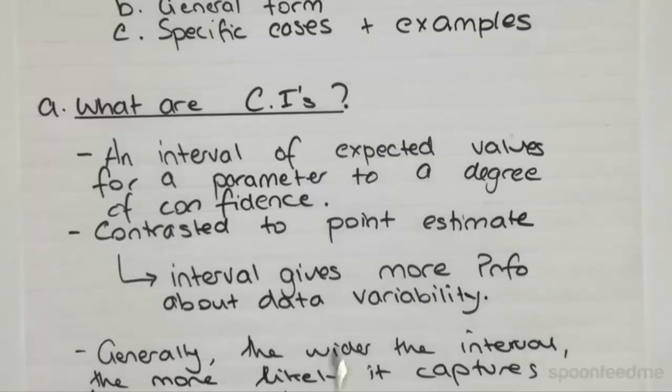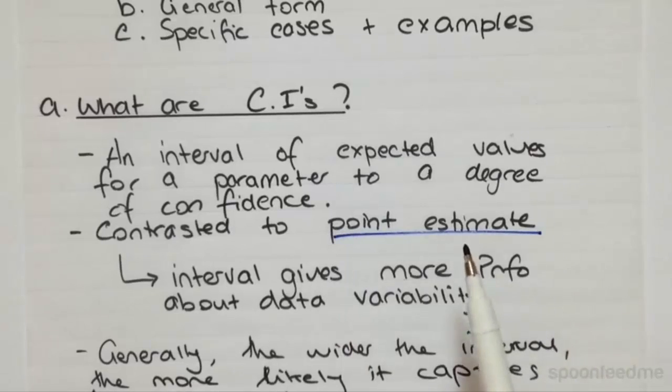Now you contrast this with a point estimate. So a point estimate is where you just calculate the sample mean and you use that as your estimation for the population mean.